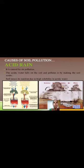Acid rain also causes soil pollution. It is caused by air pollution. The acidic water falls on the soil and pollutes it by making the soil acidic. Soil loses its nutrients due to high solubility in acidic water.